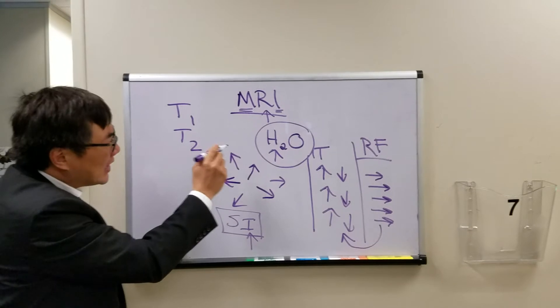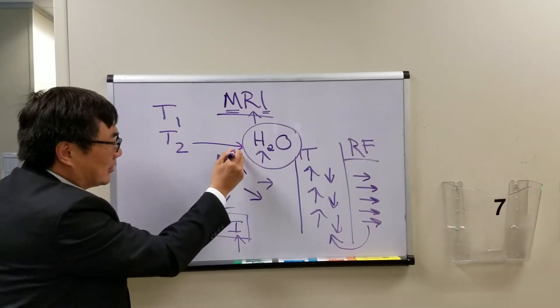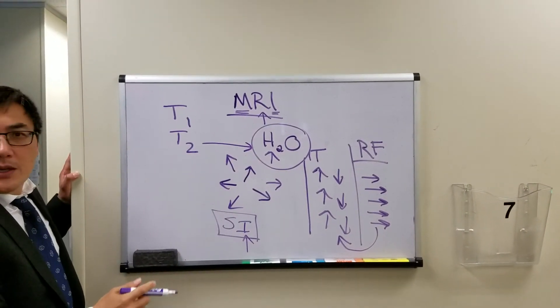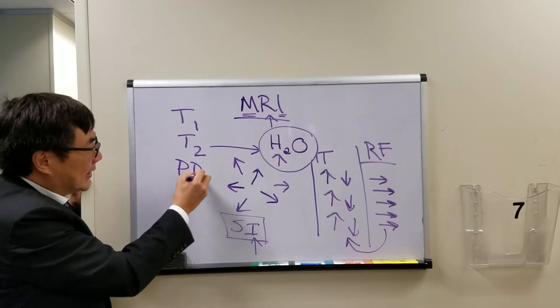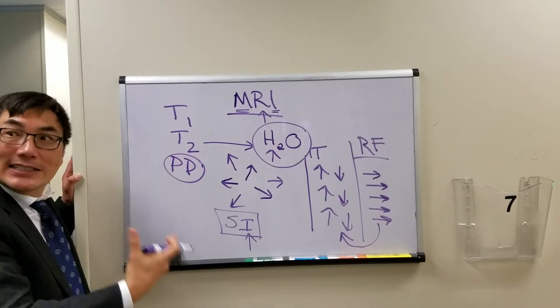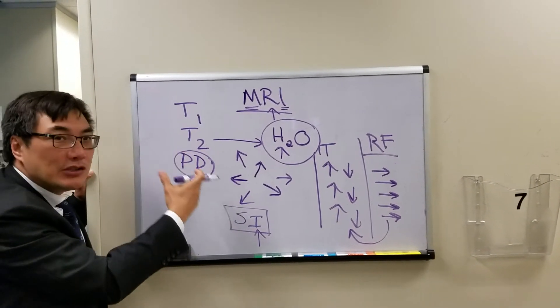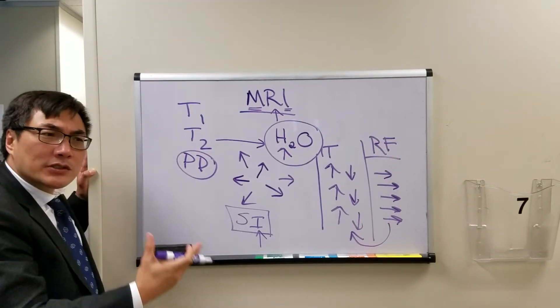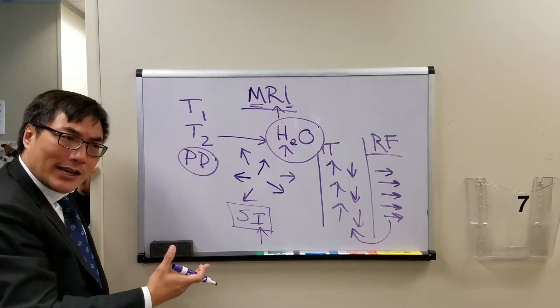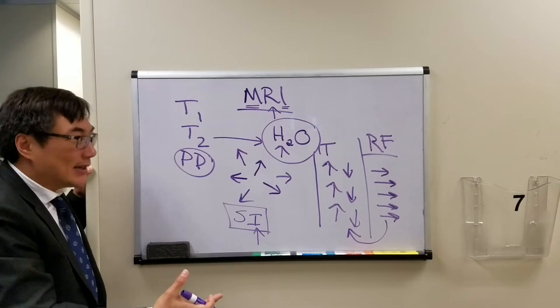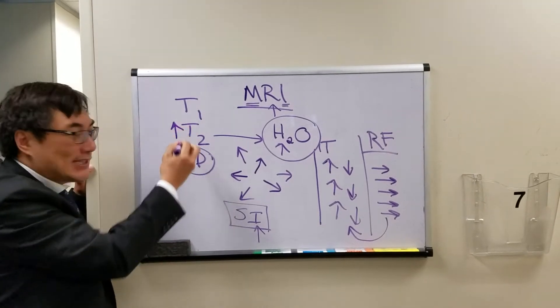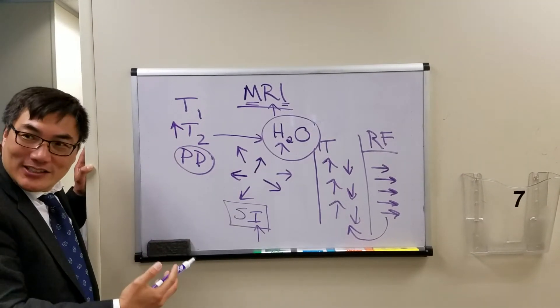And so, things that are bright on T2 tend to have a lot of water in them, because proton density is the determining factor on the signal intensity on T2. So T2 is a water study, and because most of the pathology that we encounter in the brain brings water with it, things that are bright on T2 are usually pathology.